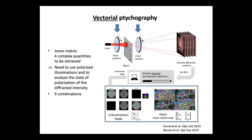We have established a couple of years ago a way to include this in the ptychography scheme of measurements. It means that instead of having one map to reproduce the object, we need to find four complex quantities of this Jones matrix. This can be done by using set combinations of polarization, introducing the linear polarization of the probe together with the linear analysis of the output field. Using nine combinations, we record a much higher quantity of data.